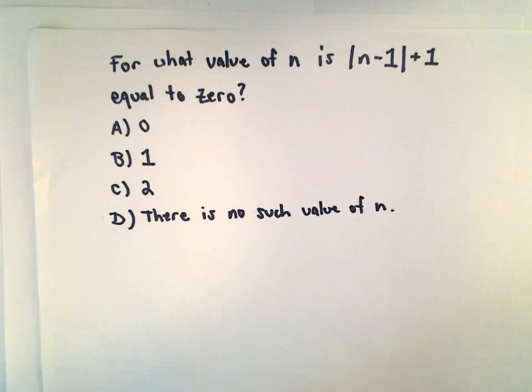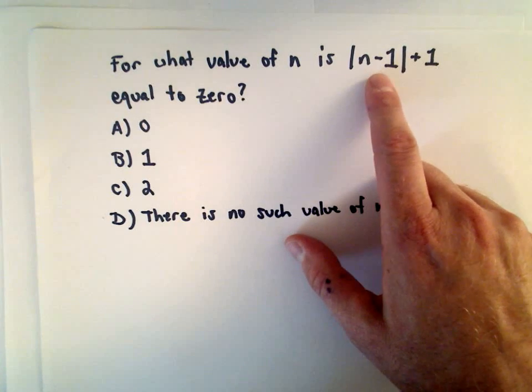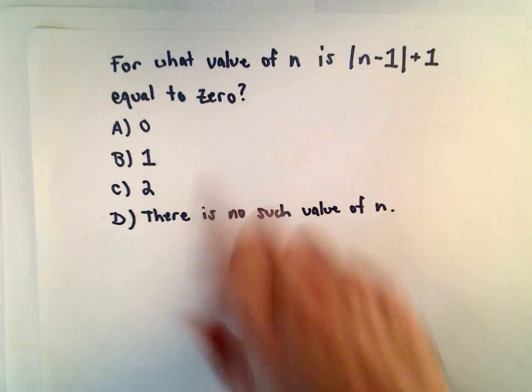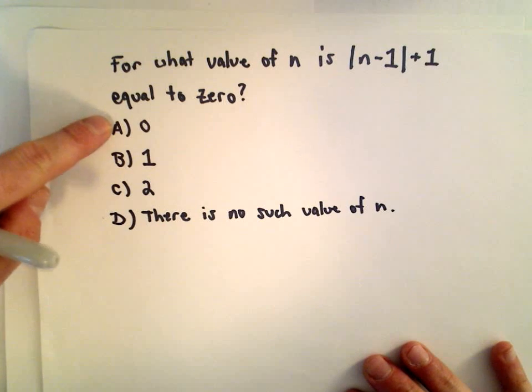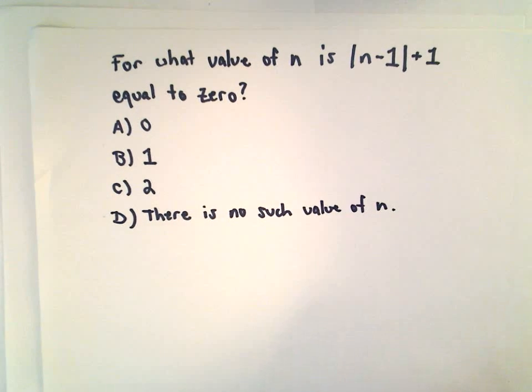So in this question it says, for what value of n is the absolute value of the quantity n minus 1 plus 1 equal to 0? So the answer choices are 0, positive 1, positive 2, or there is no such value of n.